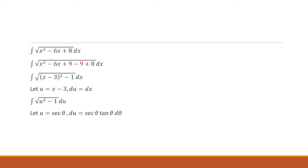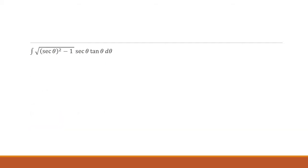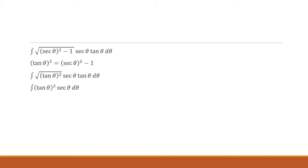At this step, I'm going to make a trig substitution. I'm going to let u equal secant theta, so du is secant theta times tangent theta d theta. Plugging it in, inside I have secant squared minus 1, which does simplify. We know that tangent squared equals secant squared minus 1, so the square root inside will be the square root of tangent squared, which is just tangent.